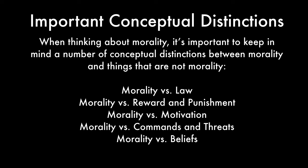The fifth distinction is morality versus beliefs. When we believe things about morality, most of the time we try to believe what's true, but sometimes we get it wrong. What we merely believe about morality is about morality, but isn't identical with morality itself. Finally, morality versus claims to morality: sometimes people loudly claim to have the correct moral system, but just as moral beliefs can be false, claims to morality can also end up being false or wrong.